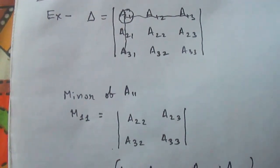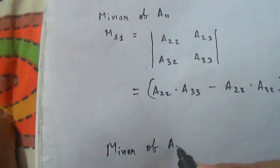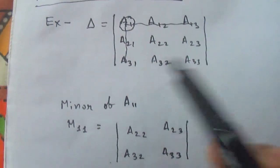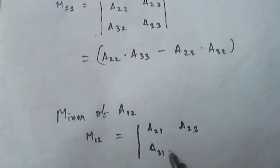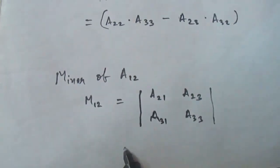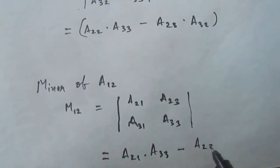Let us take another example — we will calculate the minor of a12. We eliminate its row and column, leaving |a21 a23 / a31 a33|. On expanding, it comes out to a21 × a33 − a23 × a31. This is the minor of a12. Similarly, we can calculate the minor of each element in the determinant.